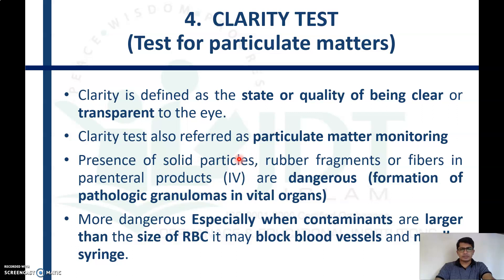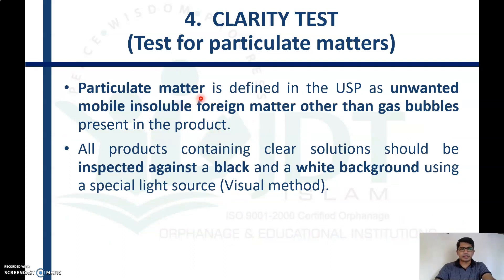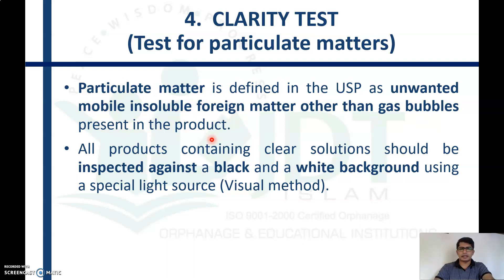The clarity test is important because the presence of solid particles — such as rubber fragments and fibers — in parenteral products is dangerous. They can form pathological granulomas in vital organs. This is especially dangerous when contaminants are larger than the size of a red blood cell, as they may block vessels, needles, and syringes. Particulate matter is defined in USP as unwanted, mobile, insoluble foreign matter other than gas bubbles present in the product.